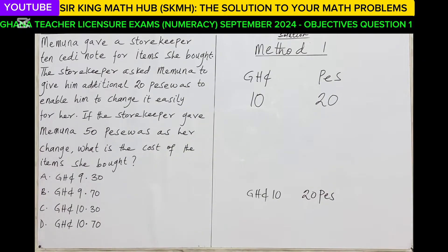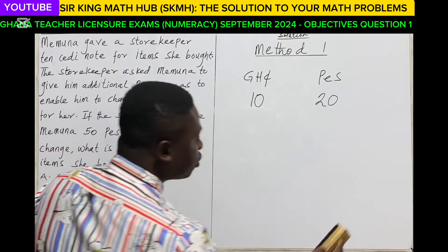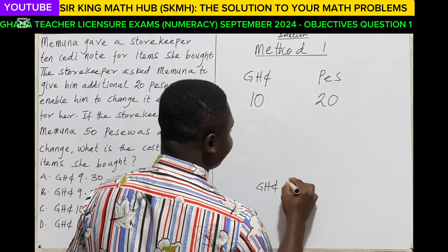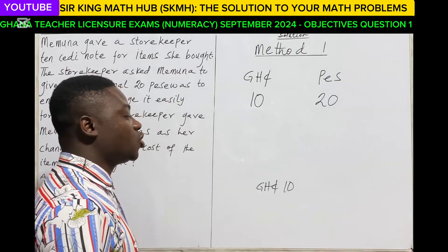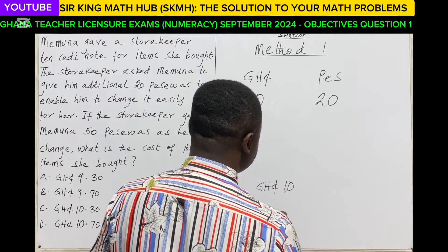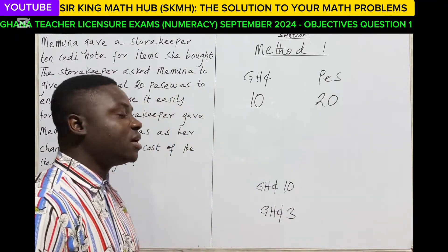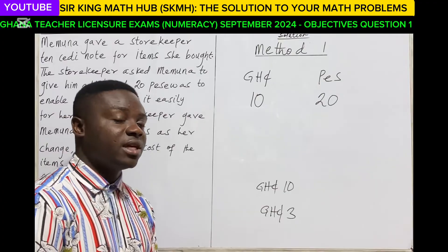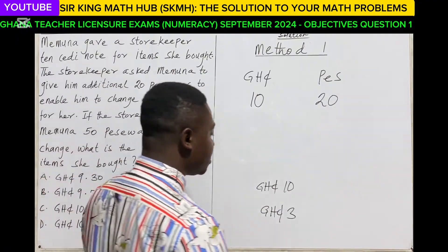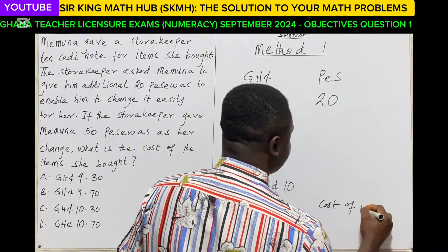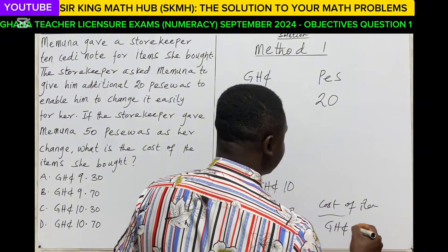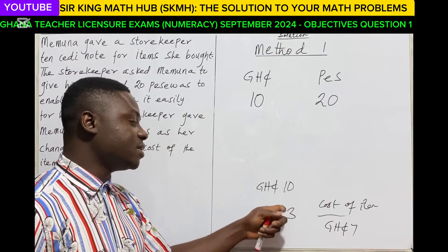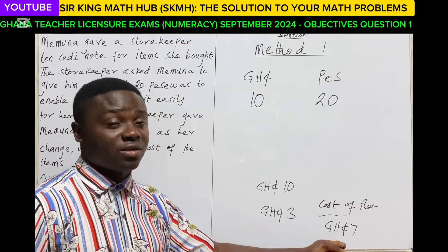Let's say you went to a store and gave the storekeeper 10 Ghana cedis after purchasing an item. In return, the shopkeeper gave you a change of 3 Ghana cedis. Then the cost of the item you bought is 7 Ghana cedis. How do you get 7 cedis? You find the difference: 10 cedis minus 3 cedis equals 7 cedis.